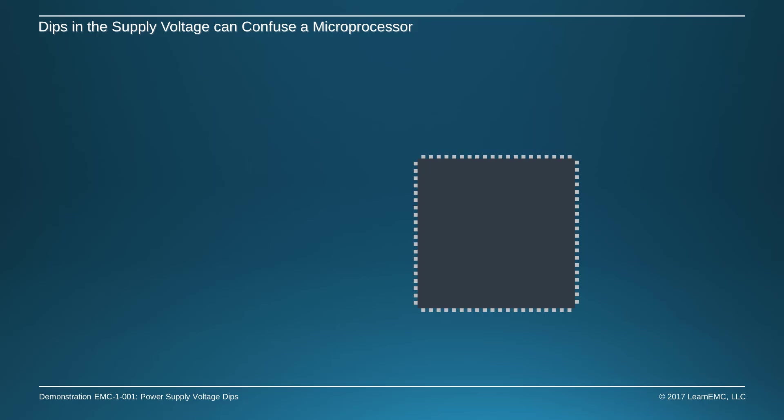Microprocessors need a constant supply of power in order to function correctly. This power is provided by maintaining a constant voltage across the power and supply pins.